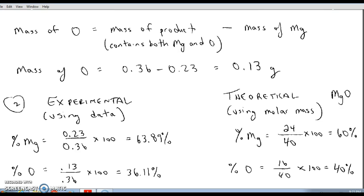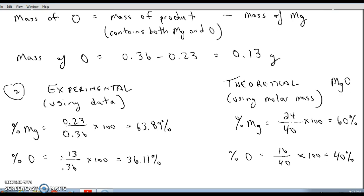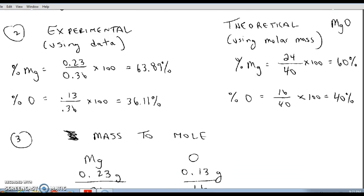Question number two asks you to find the percent composition of the product, the magnesium oxide. There are two ways of doing this: you can use the data experimentally or you can also use the theoretical molar masses from the periodic table. In either case we're taking the mass of the element over the mass of the compound and then multiplying by 100 to make that into a percent. Experimentally I'm just using my answers from number one: 0.23 grams of magnesium divided by 0.36 grams of the product, and that gives me 63.89% magnesium.